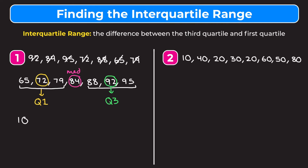To find the interquartile range, or IQR, we take Q3 minus Q1. Q3 is 92 and Q1 is 72, so 92 minus 72 is 20. The interquartile range is 20. Let's go through one more example.